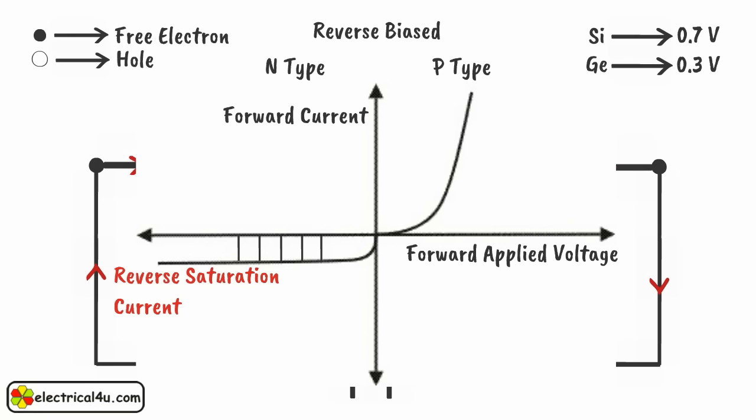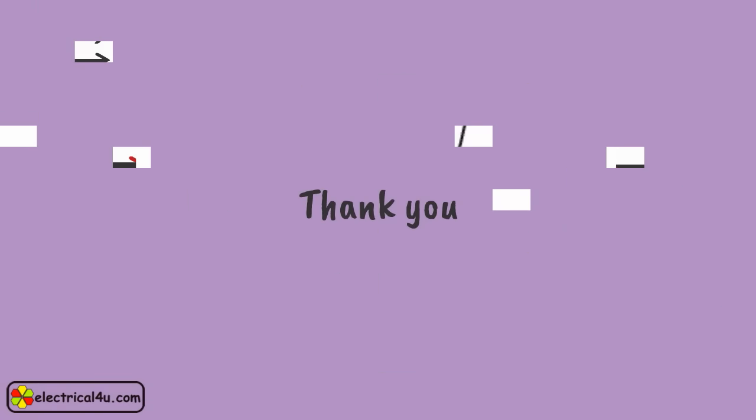So, we have seen there is a significant current through the diode when it is in forward biased condition, and it blocks current when it is reverse biased. Hope you got an idea. Thank you.